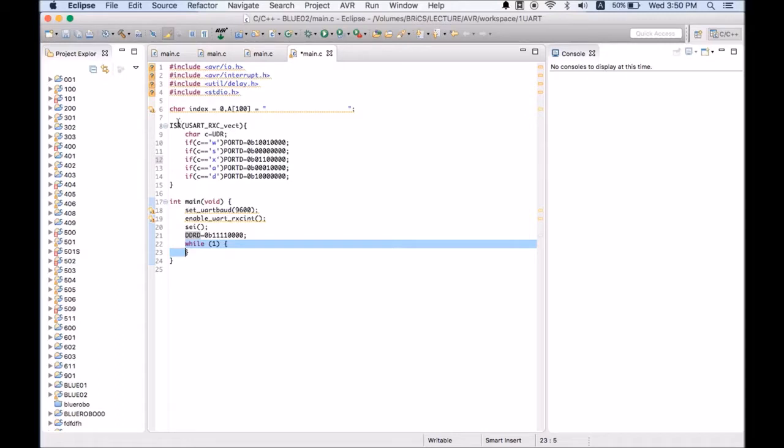Coming to the ISR, we are receiving the code from the RX pin and storing it to C. Here we have written: if C is W, port equals some pattern which is used to control the motors. Similarly, we have written for other codes: S, X, A, and D. W is used for forward motion.